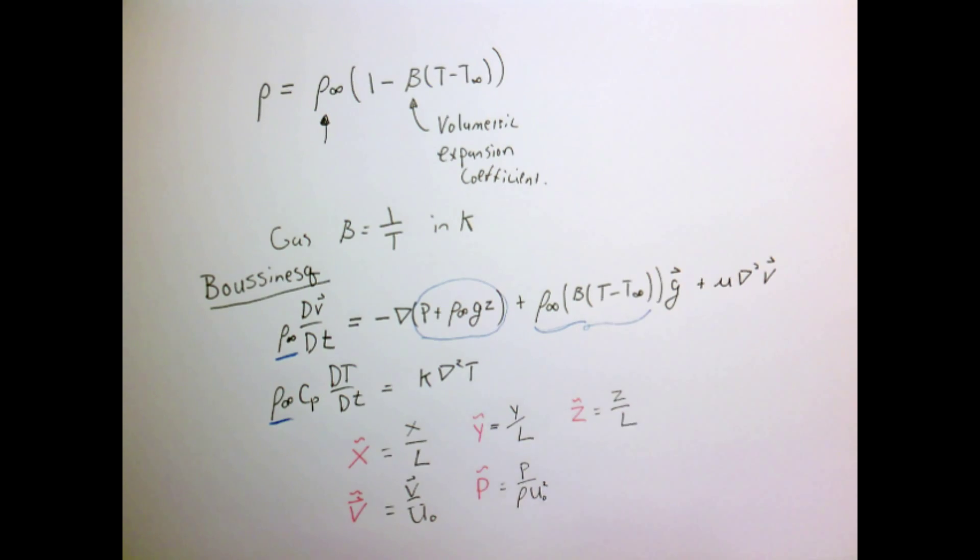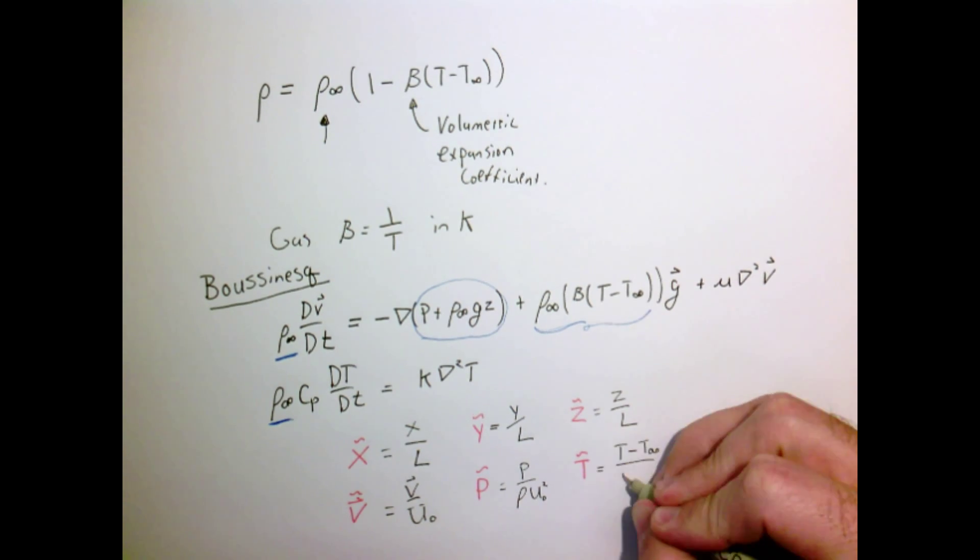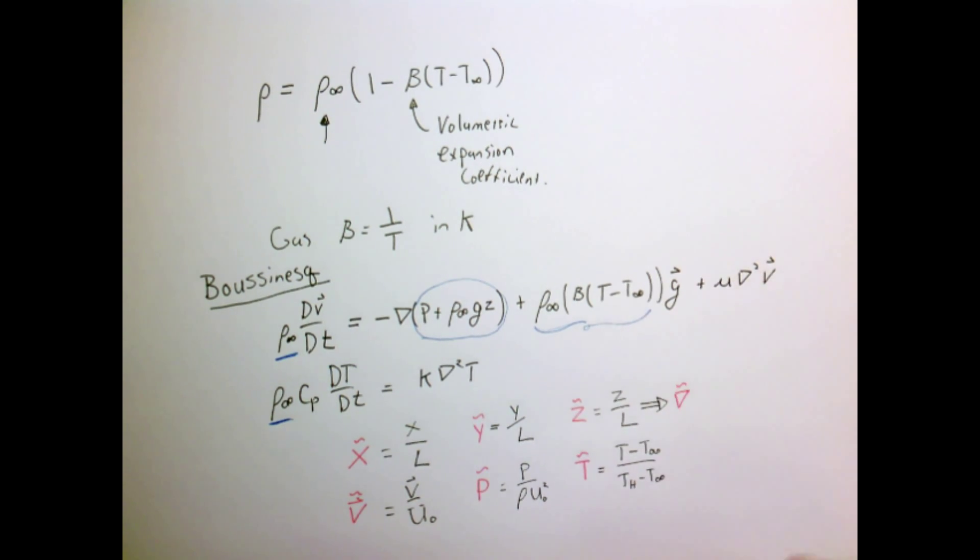We make the following substitutions. We define our new dimensionless variables, which are defined in red with twiddles above them. When we take all our derivatives, such as the gradient operator, and make those dimensionless, we also pick up factors of the length.